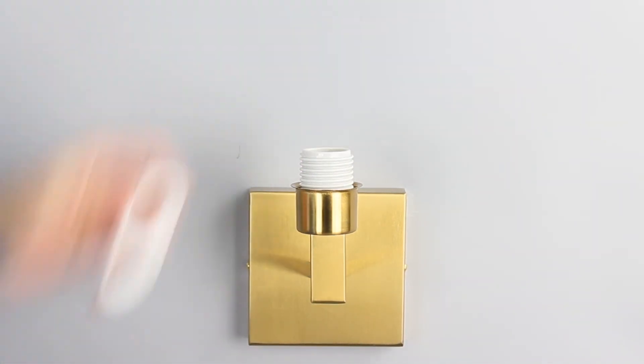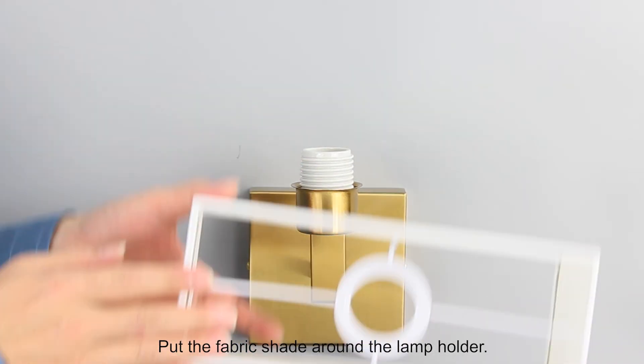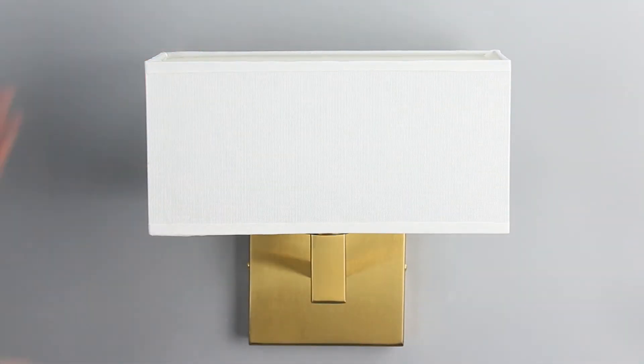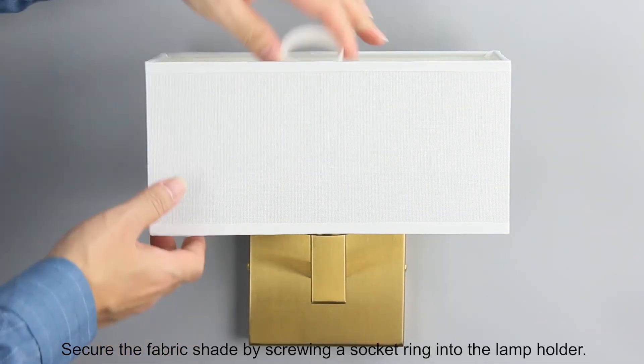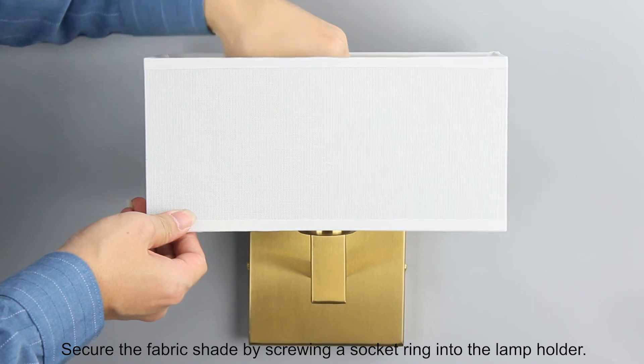Screw off the socket ring. Put the fabric shade around the lamp holder. Secure the fabric shade by screwing a socket ring into the lamp holder.